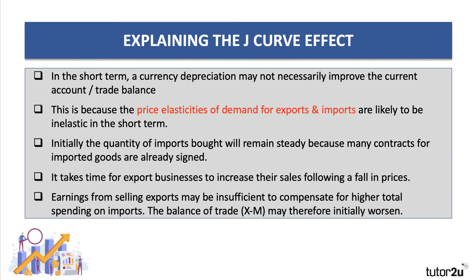If demand for imports is price inelastic — say 0.3 or 0.4 — and if the price of imports goes up by 10, 15, or 20 percent, you will spend more money on imports, and that's going to worsen your trade balance. So the key is whether there's a sufficient change in export sales to compensate and counterbalance. If there isn't, the balance of trade may worsen. It's all about thinking about the elasticity of demand for exports and the elasticity of demand for imports.